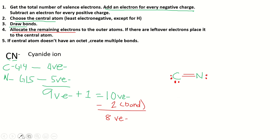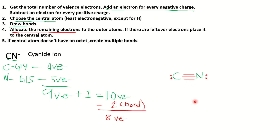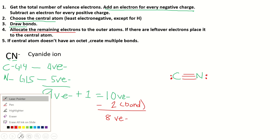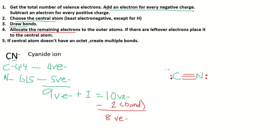We take two more electrons to form another bond, creating a triple bond. Let's check: for carbon — two, four, six, eight — carbon is happy. For nitrogen — two, four, six, eight — nitrogen is happy. So we form a triple bond between carbon and nitrogen. Our compound has a negative charge, so we put a bracket around the structure and write the negative sign. We are done with the cyanide ion.